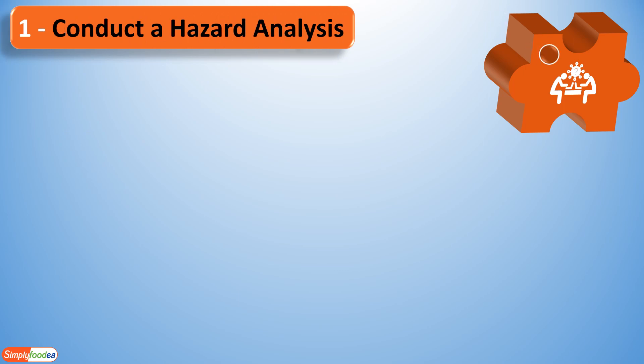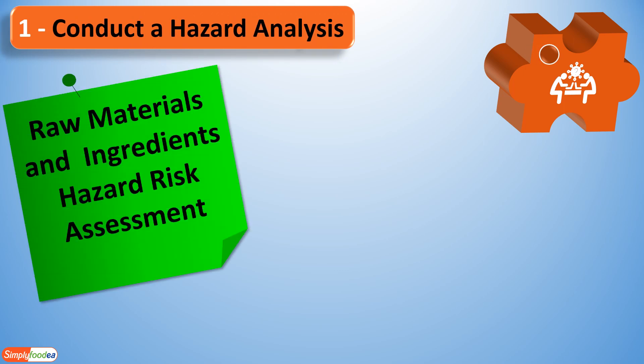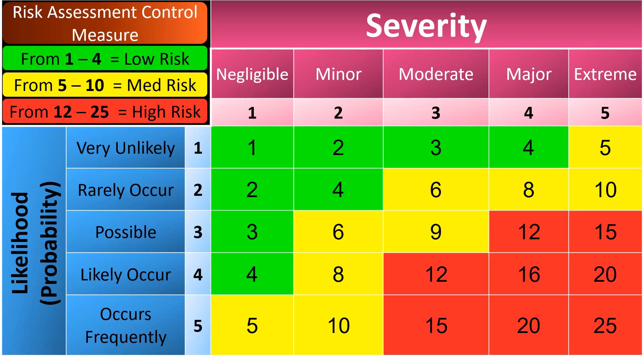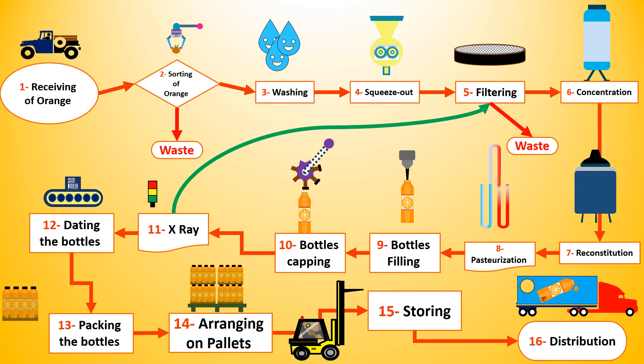Hello everybody, again on Simply For the YouTube channel. Today we'll go directly into practicing how to conduct a hazard analysis for both raw materials and product contact materials. In this third lecture, we will implement what we trained in the previous video about risk assessment and control measures — whether low, medium, or high. First, we will remember our flow diagram of the orange juice, the main example of our HACCP series.